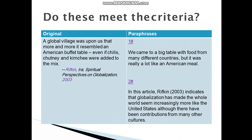The second paraphrase: in this article, Rifkin, 2003, indicates that globalization had made the whole world seem increasingly more like the United States, although there have been contributions from many other cultures. So he gave the same meaning without copying the original text of the author, and he also mentioned the name of the writer in the paraphrase so that it is considered a legal work.